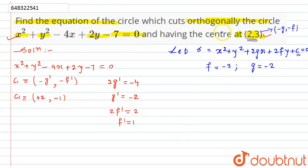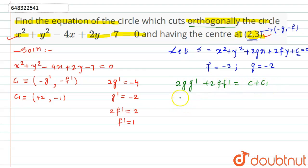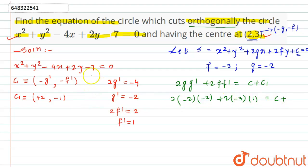To use the orthogonality condition: when two circles cut each other orthogonally, the relation is 2g·g' + 2f·f' = c + c'. Substituting: 2(-2)(-2) + 2(-3)(1) = c + c'. Here c' (the constant of the given circle) is -7.